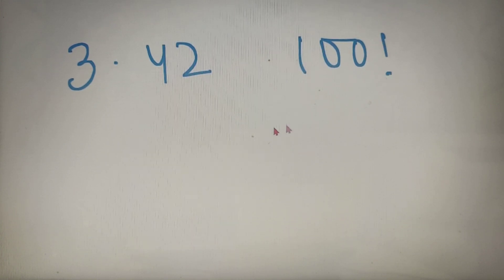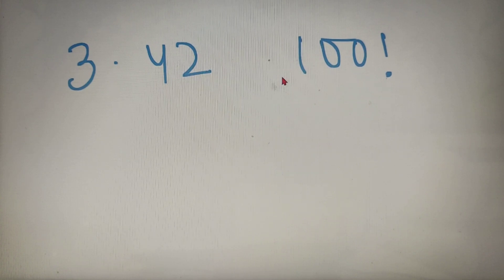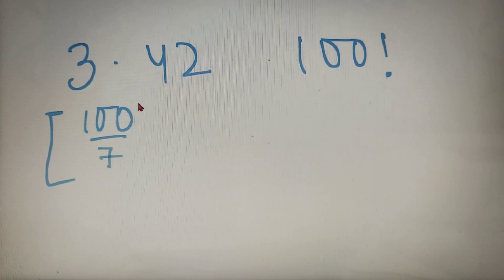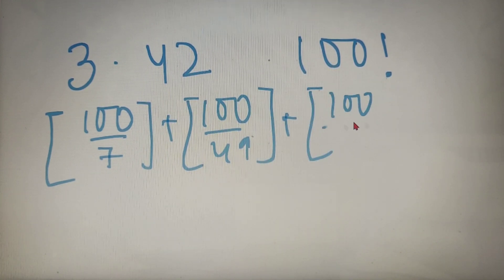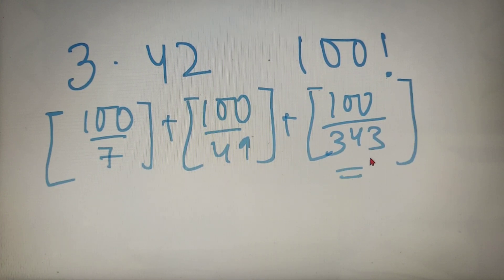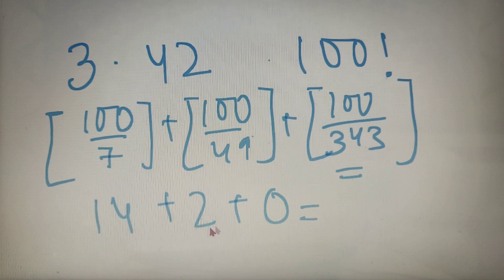For our third example, we have to find the highest power of 42 in 100 factorial. Since 42 is not prime, we prime factorize it: 42 = 2 × 3 × 7. The highest prime factor is 7, so we find the highest power of 7 in 100 factorial: ⌊100/7⌋ + ⌊100/49⌋ + ⌊100/343⌋. We stop at 343 because 7³ = 343 is greater than 100. The values are 14 + 2 + 0 = 16. So the highest power of 42 in 100 factorial is 42¹⁶.